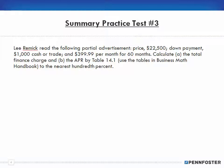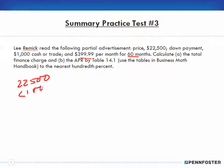Number three: Read the following partial advertisement. The purchase price is twenty-two thousand five hundred, the down payment is one thousand, and the payment is three hundred ninety-nine dollars per month for sixty months. Calculate the total finance charge. To get the finance charge, we calculate the total paid including the finance charge, less how much we're borrowing. The advertised price is twenty-two five with a thousand-dollar down payment, so we're financing twenty-one thousand five hundred.